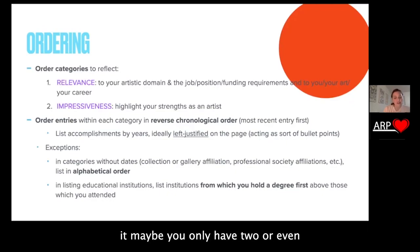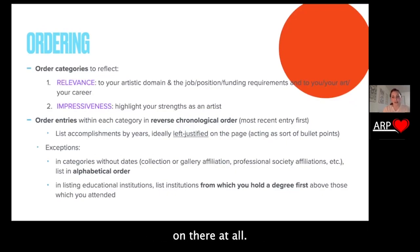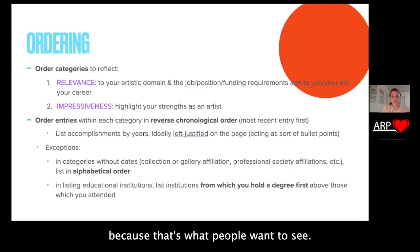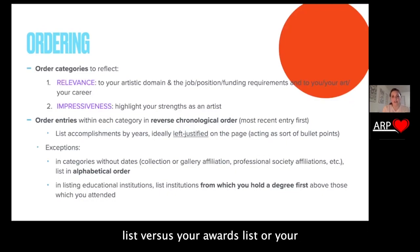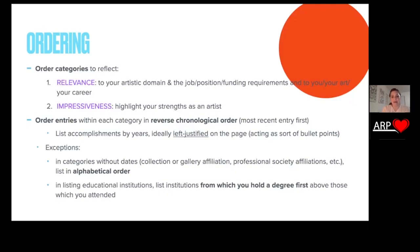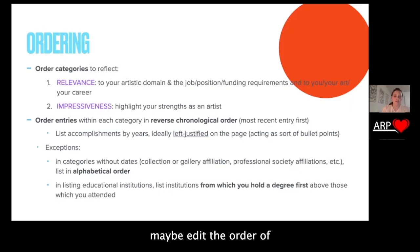So consider that. Even if you don't have a lot of exhibitions under your belt — maybe you only have two — you still might want to have it first, because that's what people want to see. You're also going to consider impressiveness: how impressive is your exhibition list versus your awards list or your related work experience list? Maybe one of those things is more impressive, and that would edit the order of the categories in your CV or resume.